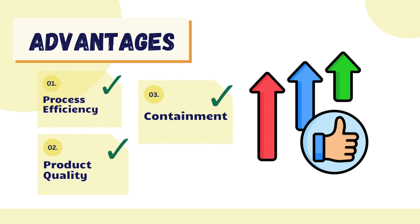Now we'll look at the advantages and disadvantages of ANFs. There are three main advantages: process efficiency, product quality, and containment. Process efficiency: ANFs combine several unit operations — filtration, washing, and drying — into one vessel, streamlining the production process, reducing process time, and minimizing the risk of product contamination during batch transfer. Product quality: the controlled and uniform drying achieved with ANFs helps maintain the quality of the final product, particularly in pharmaceutical and fine chemical industries. Containment: ANFs are designed with containment in mind, making them suitable for handling hazardous or toxic materials safely.